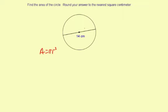Now the radius is half the diameter, so that means r equals 7 centimeters.